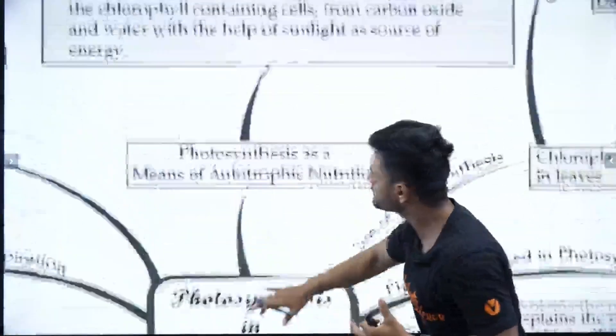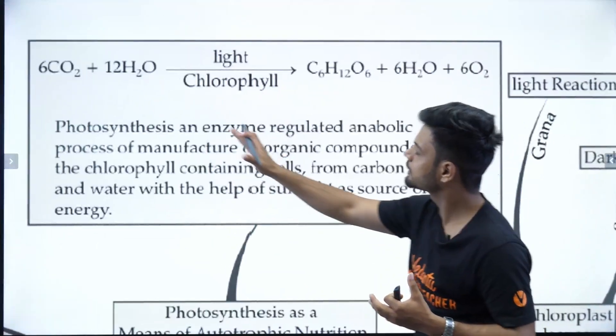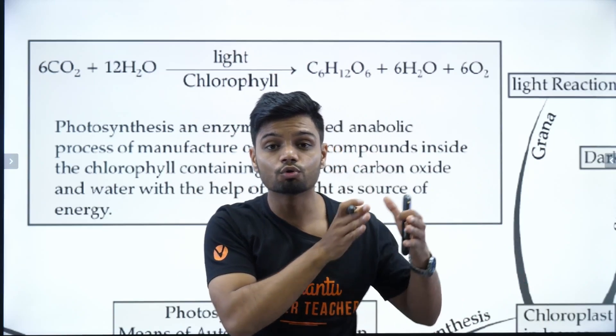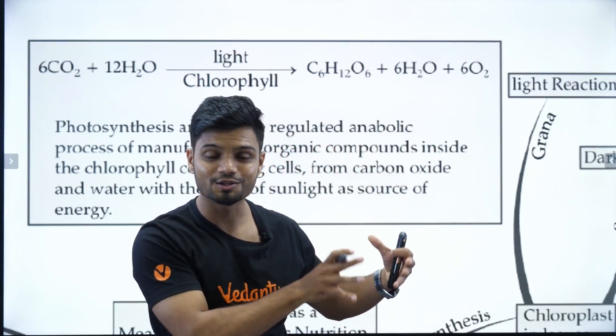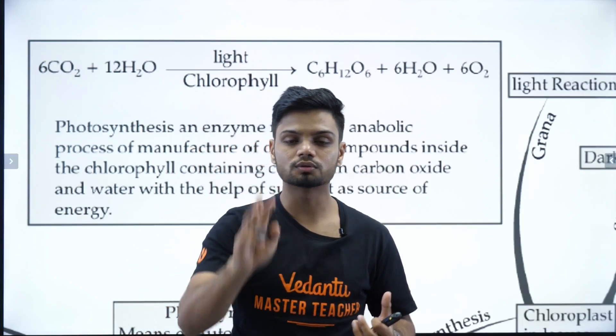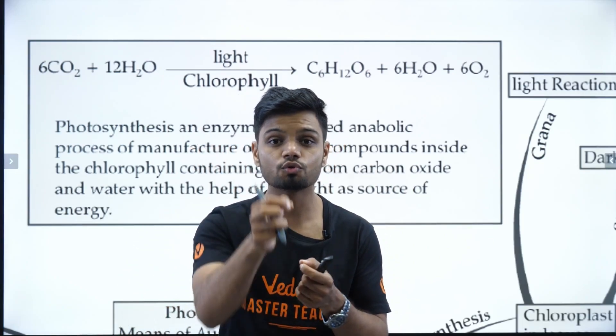Now we know the famous chemical reaction which is 6CO2 + 12H2O in the presence of light and chlorophyll is getting converted to C6H12O6 + 6H2O + 6O2. Water and oxygen are being evolved. Now I'll tell you three main points here which you need to note down.